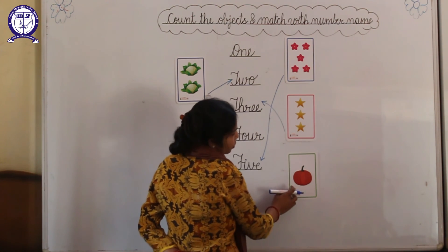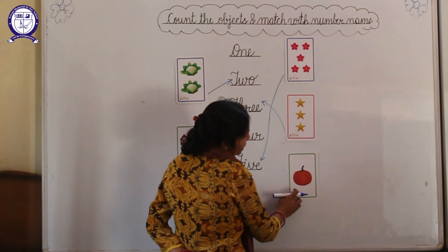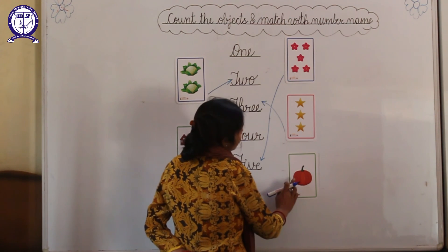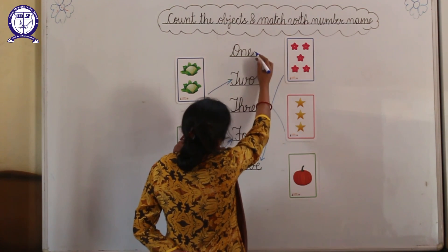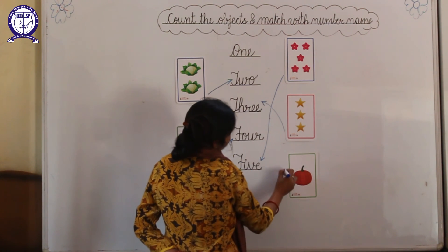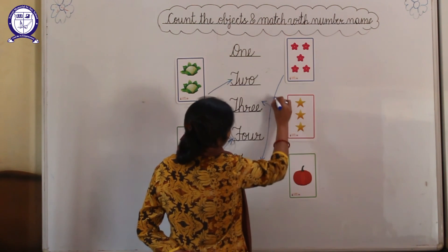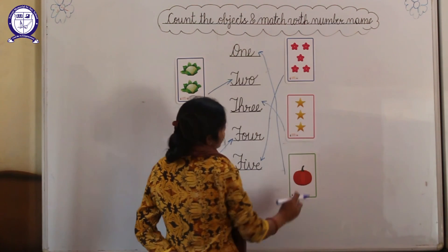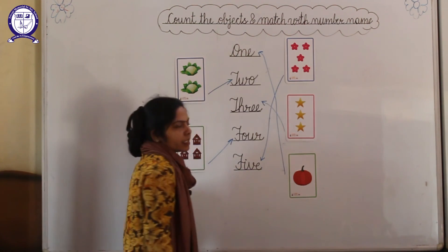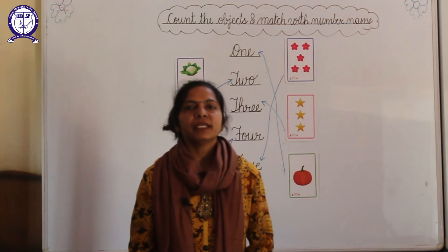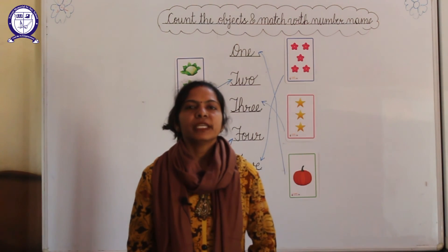And look here beta, how many pumpkins are there? Only 1. And where is the spelling of 1? Here. And match with 1. You understand everyone? Okay beta, bye bye. See you again in my next video.